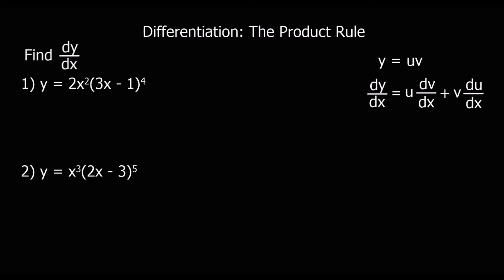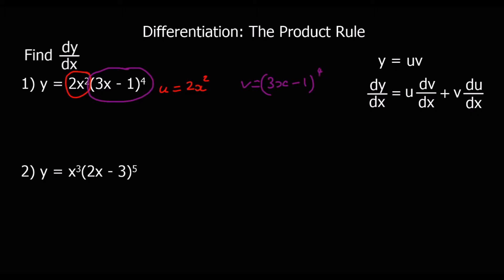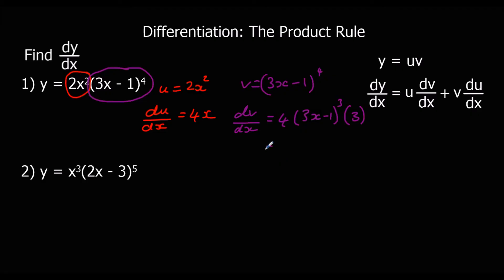Here's another question. We've got two functions multiplied together so we're going to use the product rule again. We've got u as 2x² and v as (3x−1)⁴. We differentiate both: du/dx is 4x. For dv/dx, we use the chain rule — differentiate around the bracket, then multiply by the bracket differentiated, which is 3. So that gives us 12(3x−1)³.